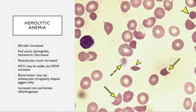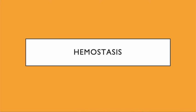Hemolytic anemia has a very characteristic look under the microscope. We have these irregularly shaped, jagged cells called schistocytes, and helmet cells — these are also characteristic of hemolytic anemias. What I really want you to be able to do is look at a CBC, determine that there's anemia, and identify iron-deficient anemia based on the fact that it's microcytic and hypochromic. I want you to be able to have that skill as you prepare for the quiz.